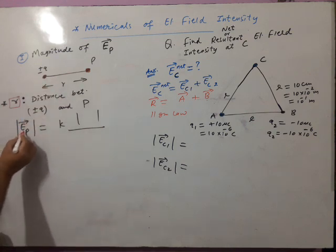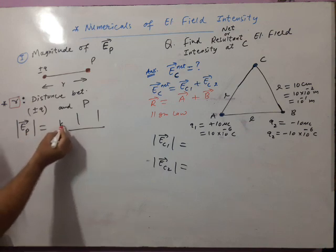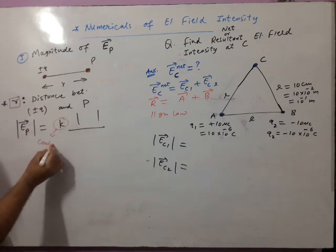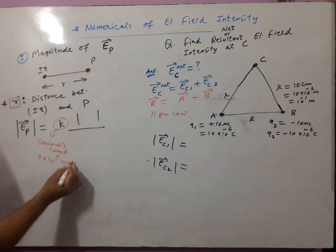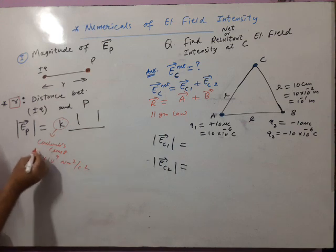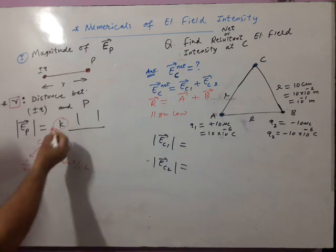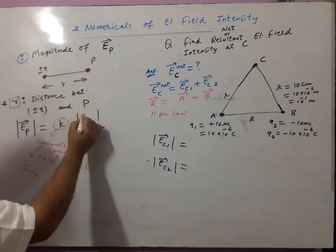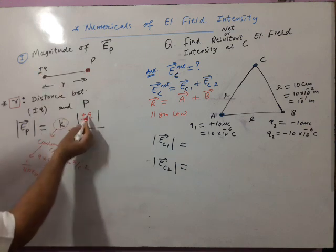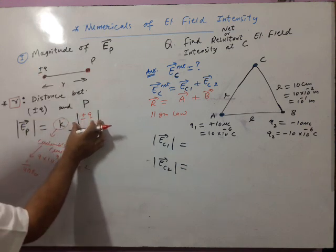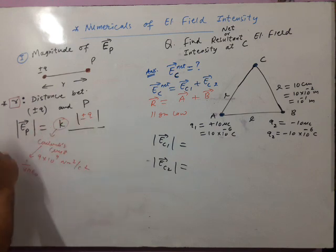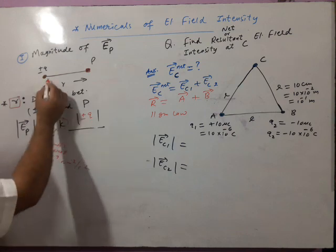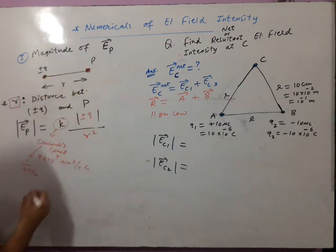The formula is: magnitude of electric field intensity at P equals K times mod of Q divided by R square. K is Coulomb's constant — 9 × 10⁹ N·m²/C², also called 1 by 4π epsilon naught. Write mod of plus or minus Q — if it is plus, write plus; if it is minus, write minus. You are finding magnitude, so that minus sign will be absorbed, but you must still write the minus sign. Divide by distance between charge and point squared, that is R square.